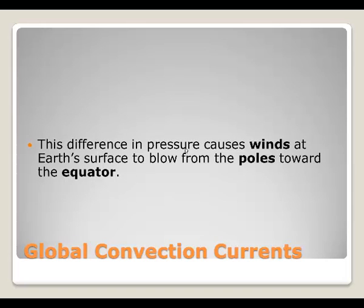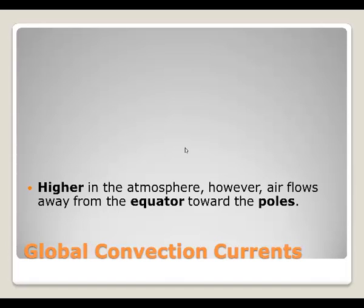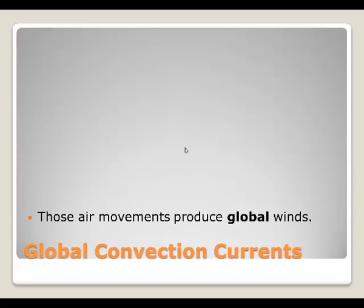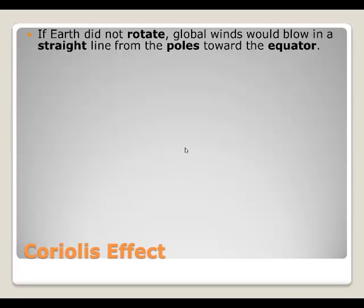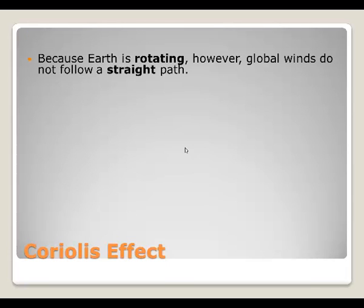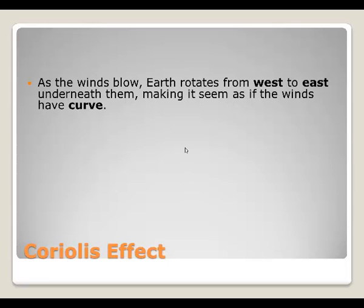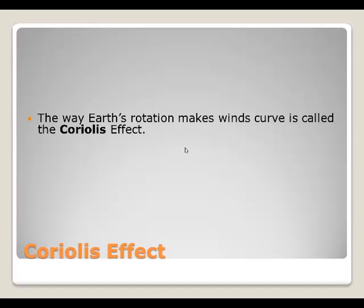The differences in pressure cause winds at Earth's surface that blow from the poles towards the equator. Higher in the atmosphere, air flows away from the equator towards the poles, creating a big cycle that helps produce our global winds. The Coriolis effect plays into this as well — the Coriolis effect is the curving of an object due to Earth's rotation. If Earth did not rotate, winds would blow in a straight line from the poles to the equator. Because our planet is rotating from west to east, global winds do not follow a straight path, giving them a curve.